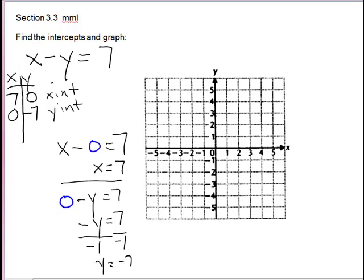Now we'll plot the points on our grid. So 7, 0. I only have 6, so I have to go over one more. And 0, negative 7. So don't go over, but go down 7.